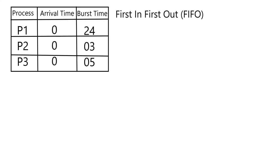Let's start with First In First Out. We have three processes: P1, P2, and P3. All of them arrive at the same time, at zero units of time. The burst time — also called execution time, we'll use these terms interchangeably — is the time required for a process to finish using CPU resources. The burst times are 24, 3, and 5 units of time respectively. Let's make a Gantt chart for this.